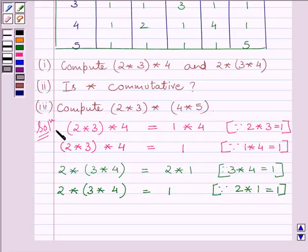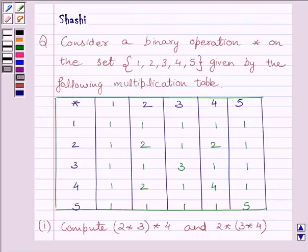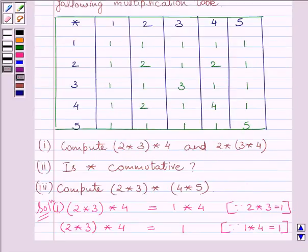This completes the first part of the solution. For the second part: is star commutative? Since the table given is a multiplication table, we find that A star A must equal A, and A star B equals B star A. As we can see clearly in the table, it is symmetrical about the diagonal starting from the upper left corner and ending at the lower right corner. So, star is commutative.